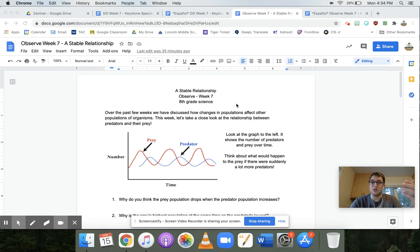So for this assignment, this is our observe assignment, we are looking at graphs of predator and prey relationships. We've learned a lot about how predator and prey relationships change and how they change populations. But now we have actual data and actual graphs that show us how they work.